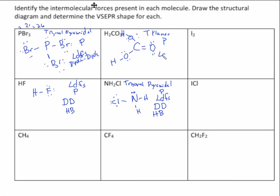Everything has London dispersion forces — that's one force. Because it's polar, it has dipole-dipole. Can this thing hydrogen bond? Is there a hydrogen bonded to an oxygen, fluorine, or nitrogen that has a lone pair? The answer is yes, so this one can also hydrogen bond.